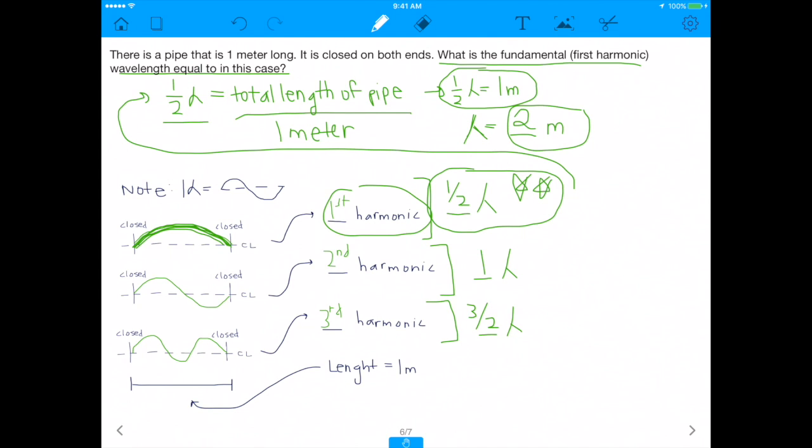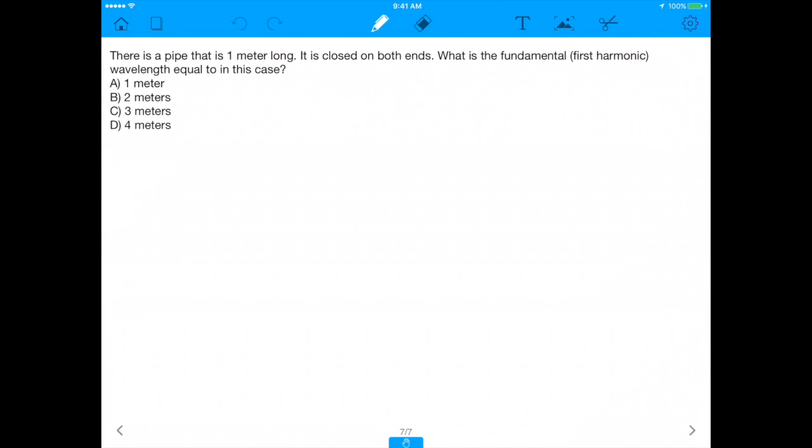And so with that, we just solved this entire pipe problem intuitively. I never used any of those billion formulas you get. I showed you that when you have two closed ends, you get node to node, and you can answer this question, because now the answer here is two meters, so that's B.